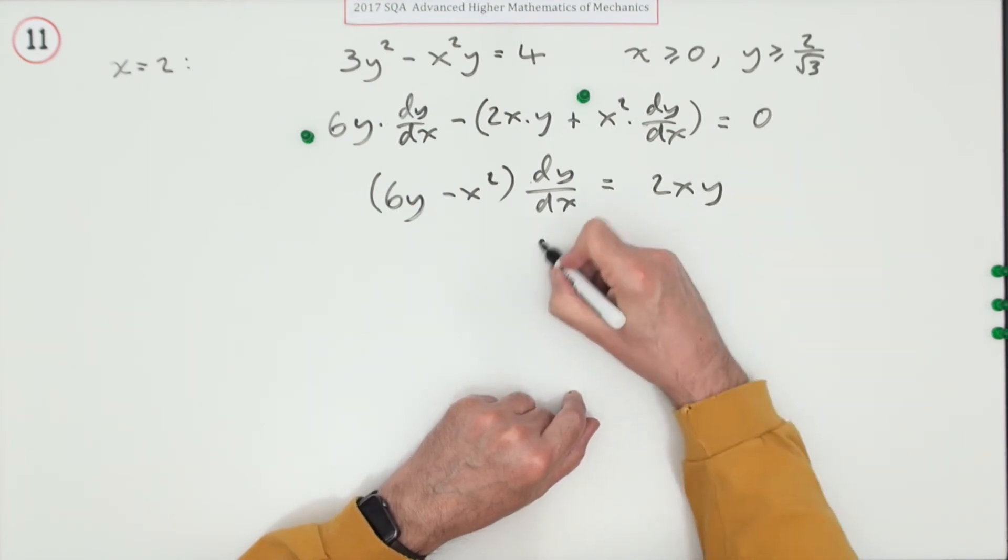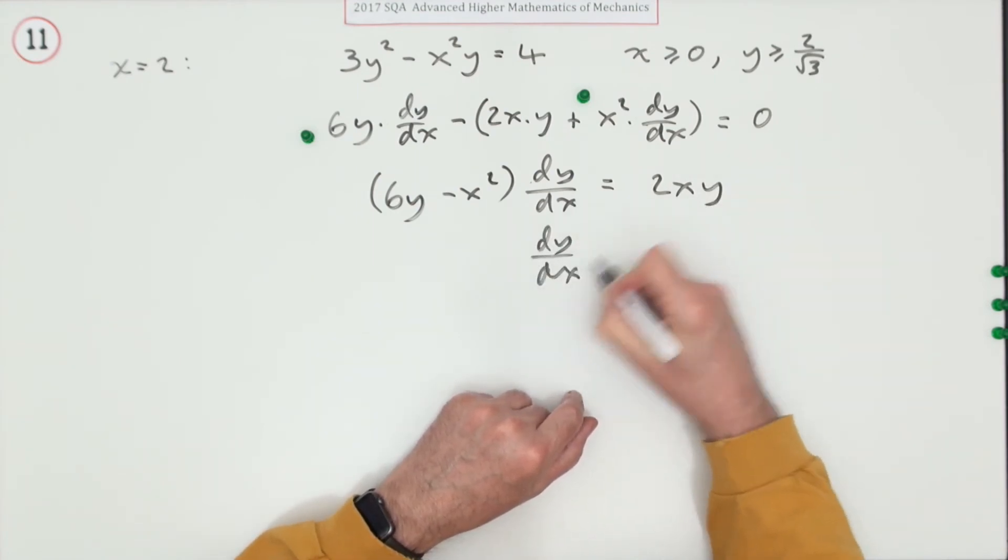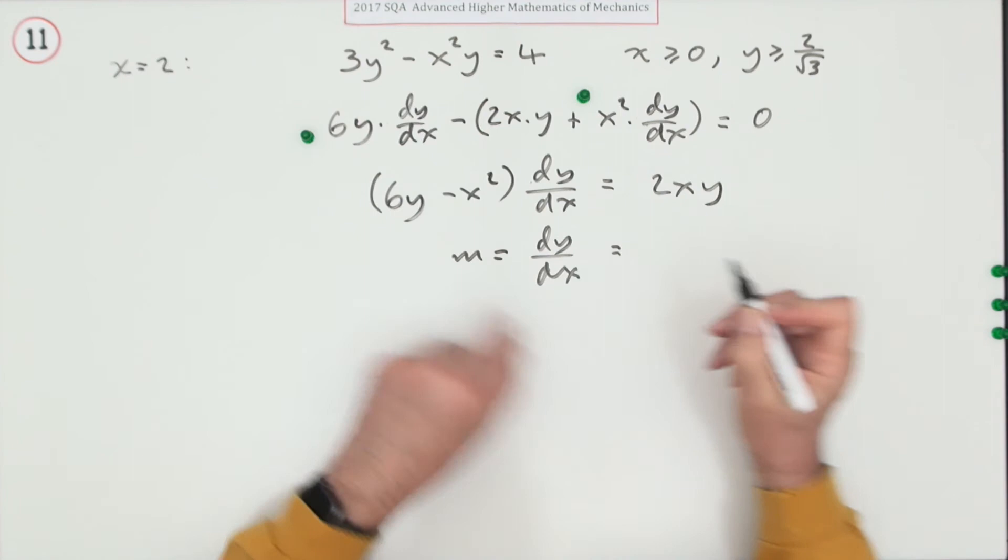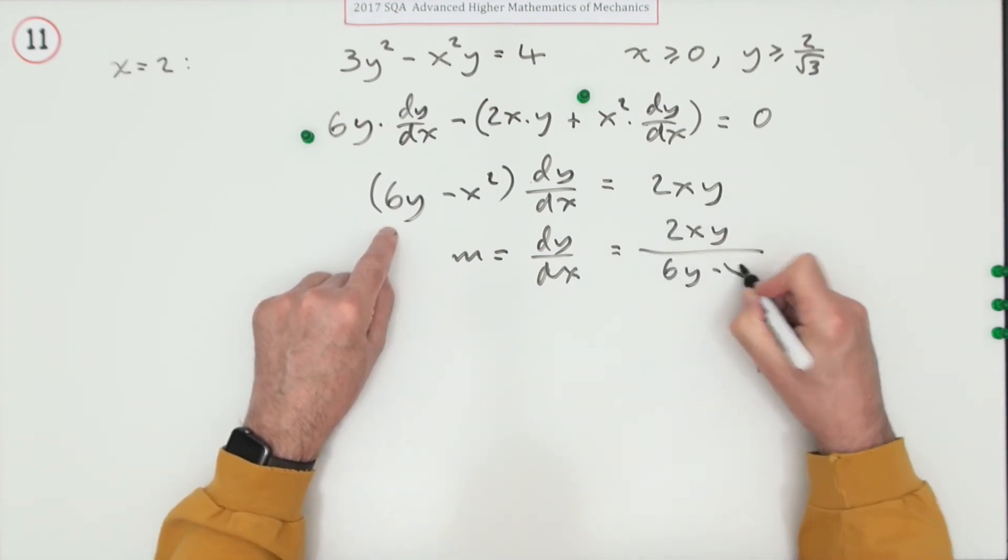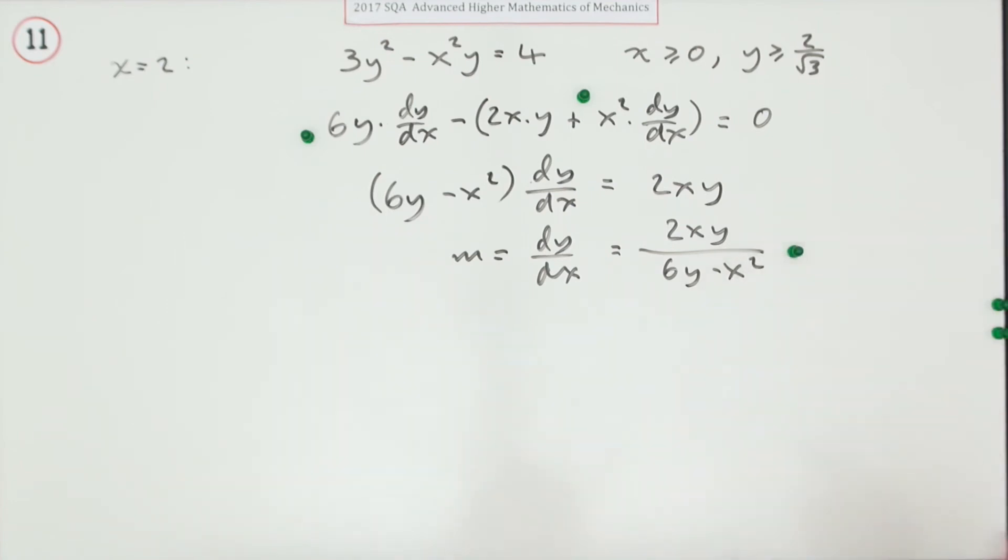Tidying it up, the expression for the gradient is m = 2xy/(6y - x^2) for the third mark.